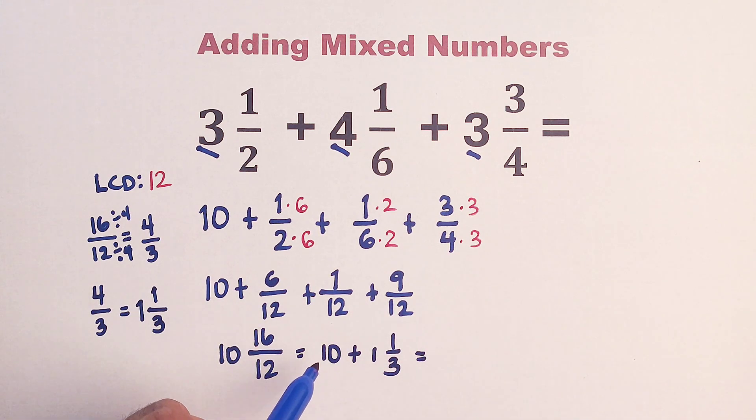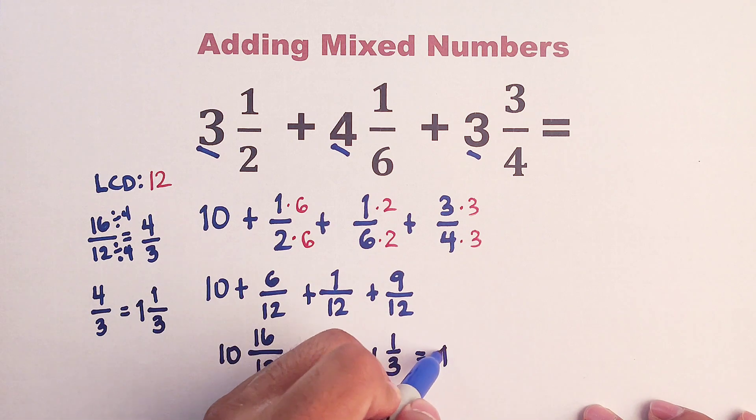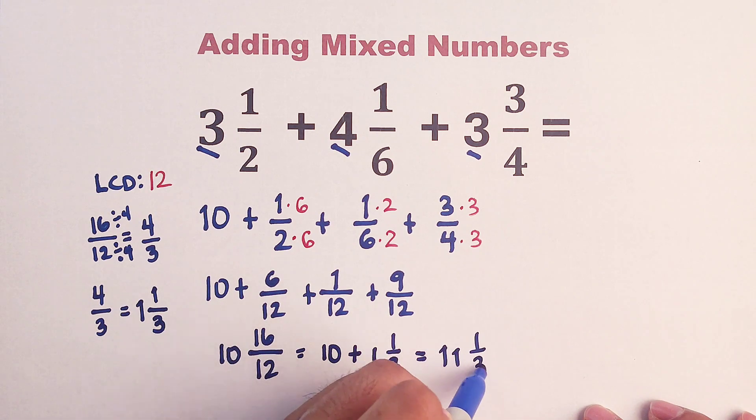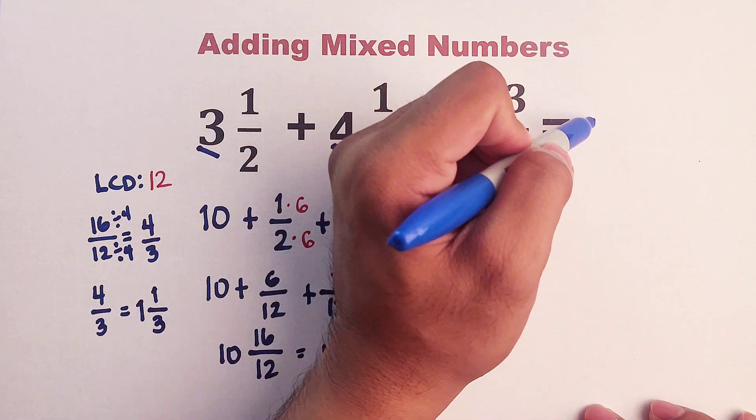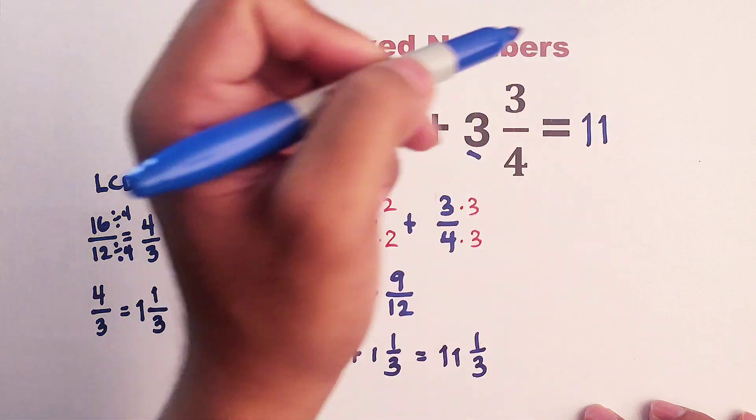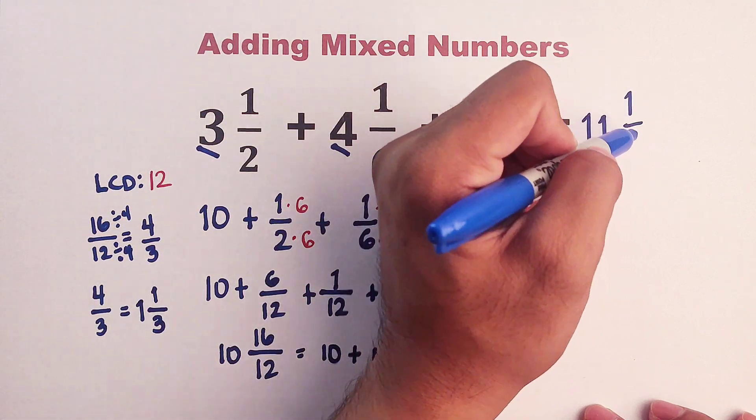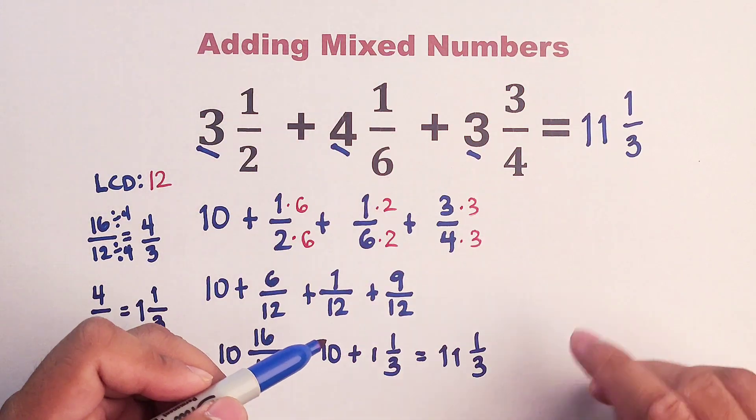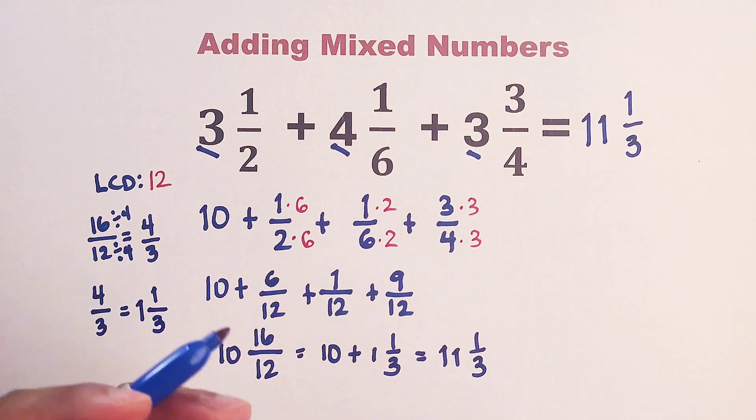And this time, we will add 10 plus 1 because they are both whole numbers. This is 11 and 1 over 3. And as you can see, the sum of these 3 mixed numbers is simply 11 and 1 over 3.